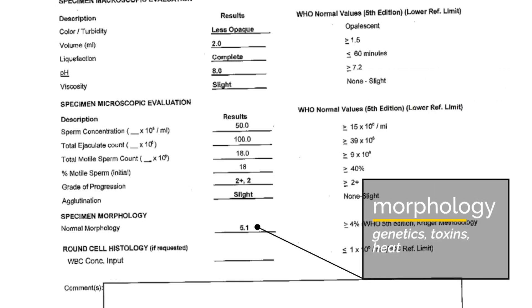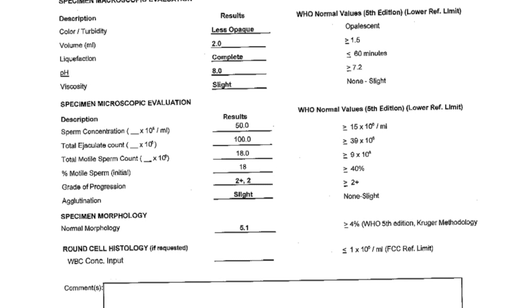The final component is the morphology, or how normal the sperm look. Sperm with abnormal heads aren't able to penetrate the outer layer of the egg, and these sperm are also frequently found to contain abnormal DNA. Abnormal morphology can be due to abnormal genetics of the male, which cannot be fixed. Other causes that can be fixed include toxic exposures and increased temperature. Depending on the findings of your semen analysis, your doctor may ask for additional tests. Hopefully, this video has helped you make sense of your semen analysis report.